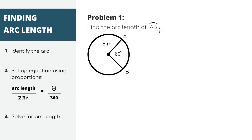Looking at our first arc length problem, we're asked to find the arc length of AB. Our first step is to identify the arc. Because we're told it's arc AB, it's going to be the distance between point A to point B. We're also given that our radius, which is the distance from the center to the perimeter, is 6 meters, and this angle is 80 degrees.